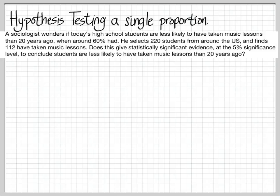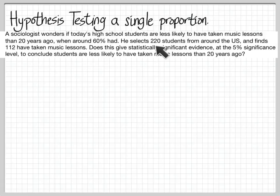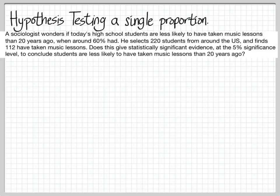There are a lot of things in this question. I'll talk about what's meant by the significance level near the end, but most of the rest is pretty straightforward. 20 years ago it was around 60%. He selects a sample of 220 and finds 112 have taken music lessons. If you divide those, that's around 51%, so it's gone down. But the question is, has it gone down enough that we can conclude that this 60% number from 20 years ago is too high and actually now it's lower? I'm going to show you the mechanics of how we make that decision.